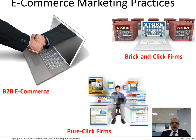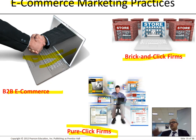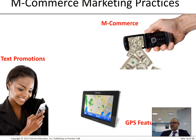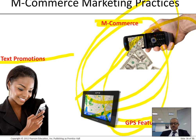Next, we've got e-commerce. Brick and click means the business is both online and offline. Pure click means they're only online. Business-to-business e-commerce is conducted through computers between companies. Brick and mortar is offline only — no online presence — though most businesses today have some sort of online presence. E-commerce includes text promotions and GPS features, and these are all converging into standard marketing practices.